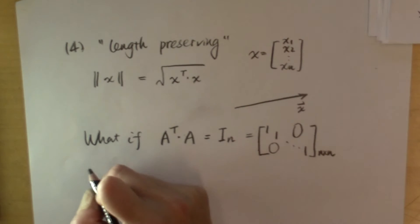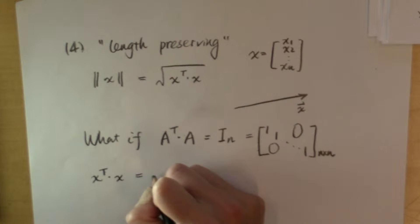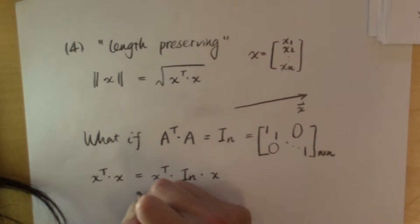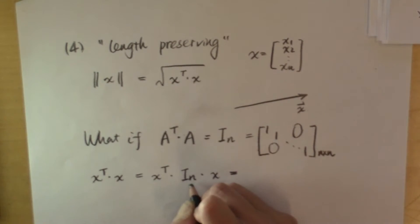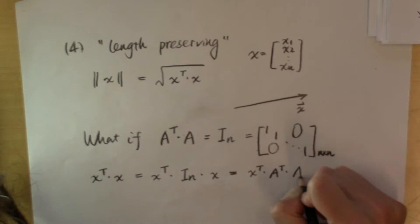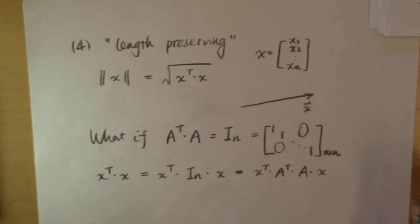If this is true, then the scalar product of x with itself is equal to x transpose times the identity matrix times x. And substituting the identity matrix with A transpose times A, this is x transpose times A transpose times A times x.